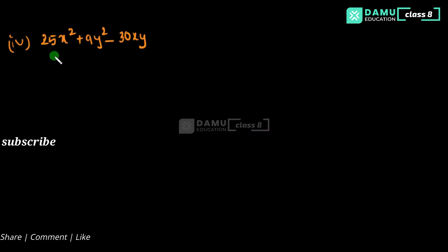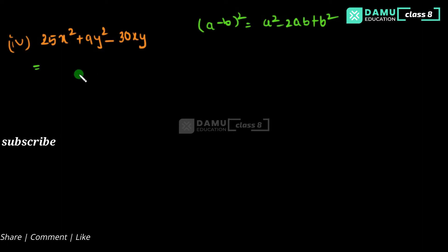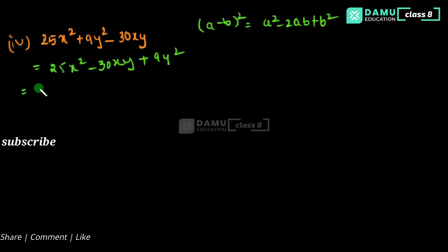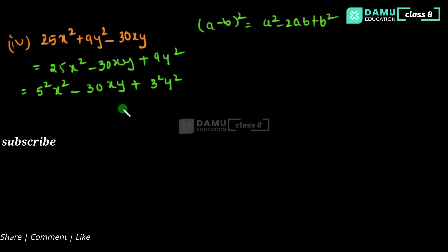Fourth question: 25x squared plus 9y squared minus 30xy. Here one sign is plus and one is minus, so it may be the (a − b) whole square formula. We rearrange as 25x squared minus 30xy plus 9y squared. Then 25x squared is 5 squared times x squared, and 9y squared is 3 squared times y squared — both perfect squares.